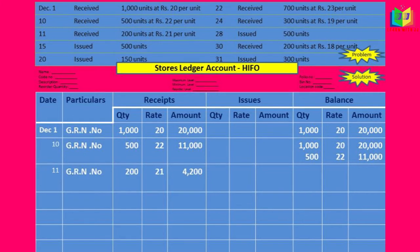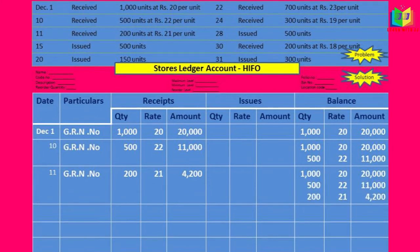December 11th is also a receipt, so I will write it again in the receipts column: 200 units at the rate of 21, giving 4,200. In the same order I will write it in the balance column.